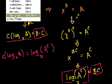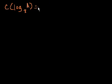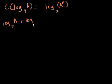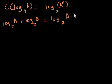Let's review what we know so far about logarithms. We know that c times logarithm base x of a is equal to logarithm base x of a to the c. And we know that logarithm base x of a plus logarithm base x of b is equal to the logarithm base x of a times b.